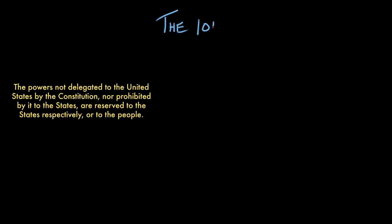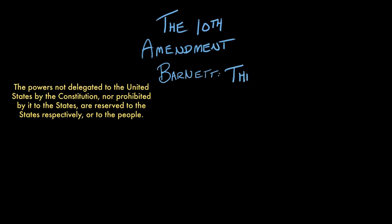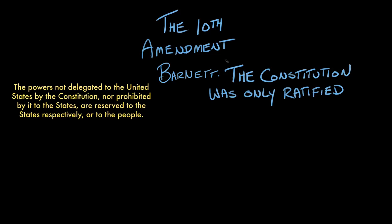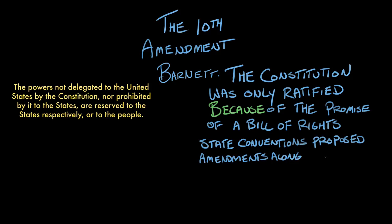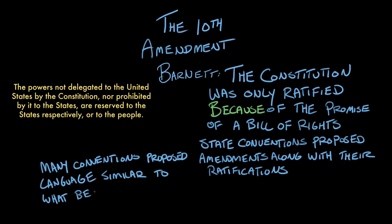During the ratification debates, there was lots of opposition to the Constitution. In fact, the Constitution was only ratified after the proponents — who called themselves Federalists — promised that amendments would be made, because it was the lack of a Bill of Rights and other changes that caused people to oppose it. Ratification conventions started proposing amendments to Congress, ratifying it but saying, here are some changes we want to see made. One of those changes, requested by several states, was wording very much like what became the 10th Amendment.